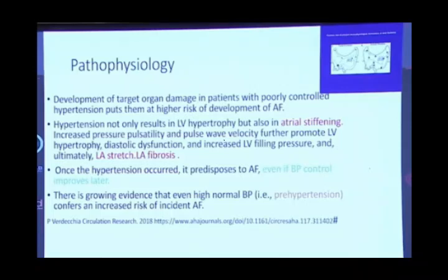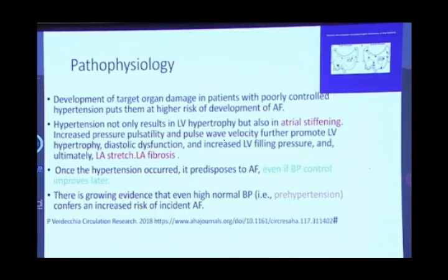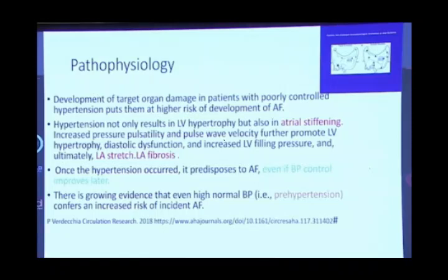What is the cause of this left atrial fibrosis, which is the basic pathology of developing atrial fibrillation, commonly at the pulmonary vein entrance? Once hypertension occurs, it predisposes to AF. But even if blood pressure control improves later — that's a very strange statement — meaning there is no definite correlation between hypertension and atrial fibrillation. Also, at the pre-hypertension stage below 130 over 80, people are also developing atrial fibrillation.